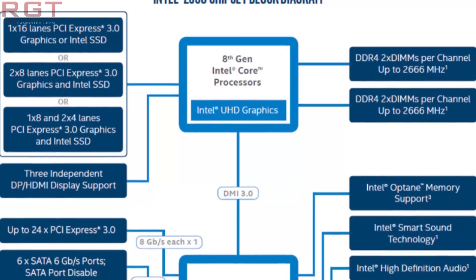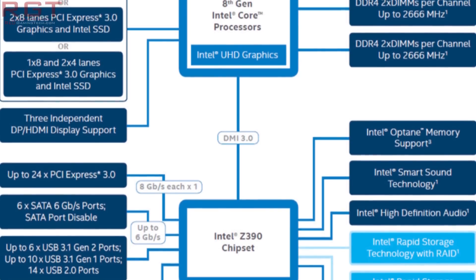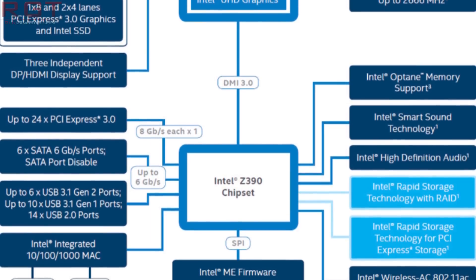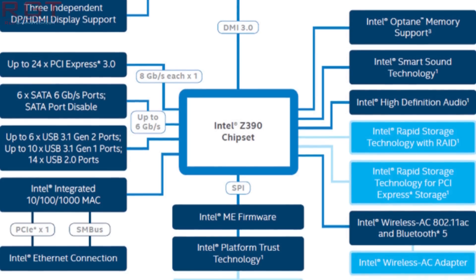The i9 will be the i9-9900K, and from the reports we're going to be seeing this launch with the Z390 platform. It's going to have eight cores and 16 threads, with the i7-9700K having six cores and 12 threads, and finally the 9600K having just six cores — in other words, no hyper-threading.